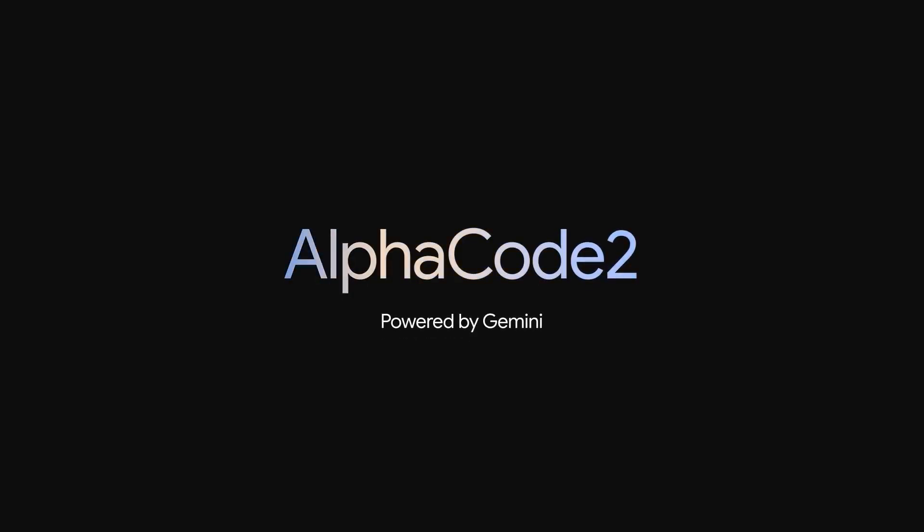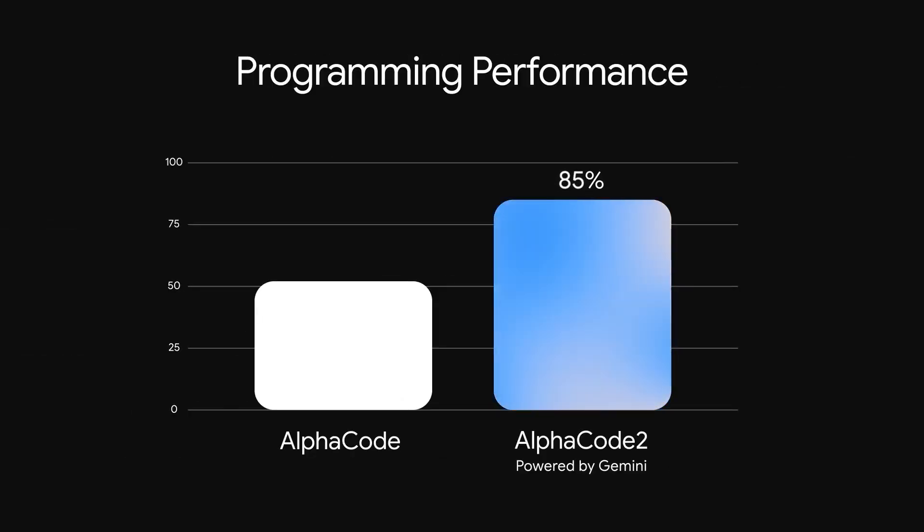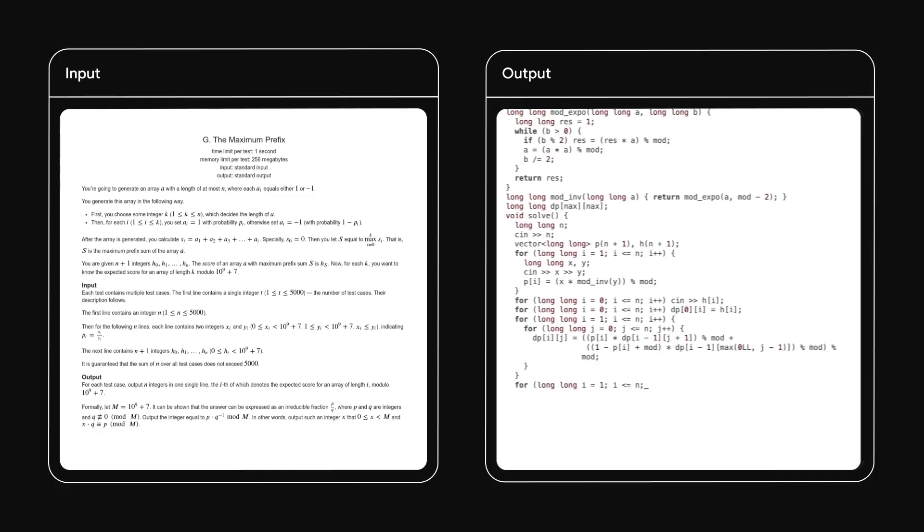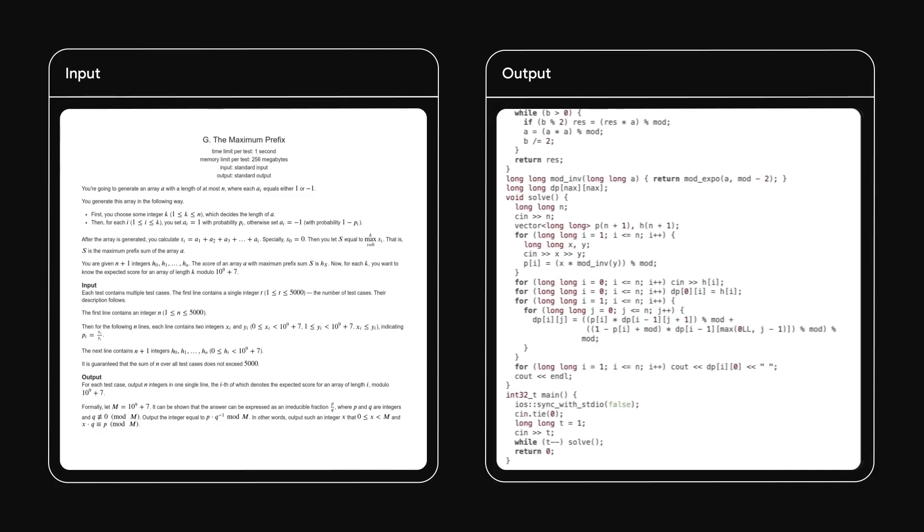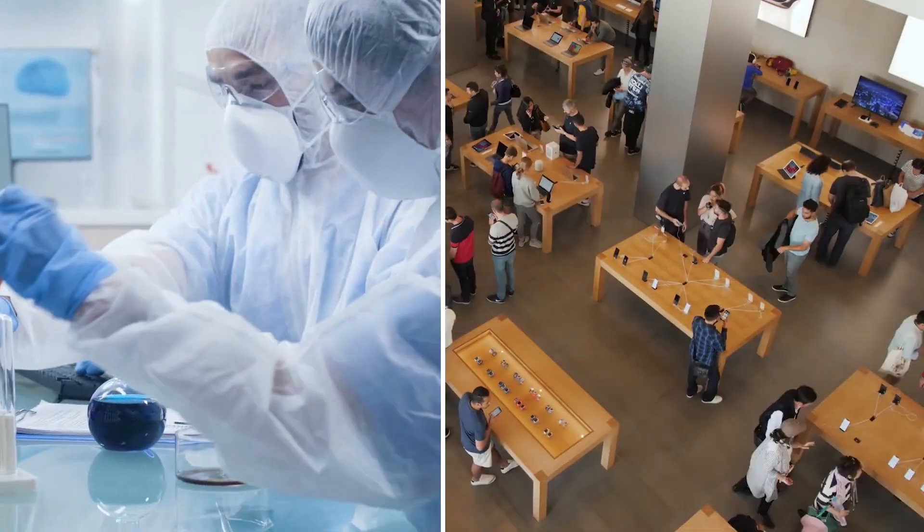With AlphaCode 2, a new system within Gemini, it outperforms 85% of coding competition participants, showcasing its advanced reasoning and problem-solving capabilities.